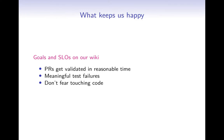We met with our team to discuss what keeps our velocity and motivation. Pretty much everyone agreed on three main things: pull requests need to get test results reliably and be validated in a reasonable time; failures need to be relevant and meaningful — humans must not waste time interpreting unstable test results to figure out if they're relevant to their proposed change; and we must not be afraid of touching code. We've written down these goals on our public wiki page.